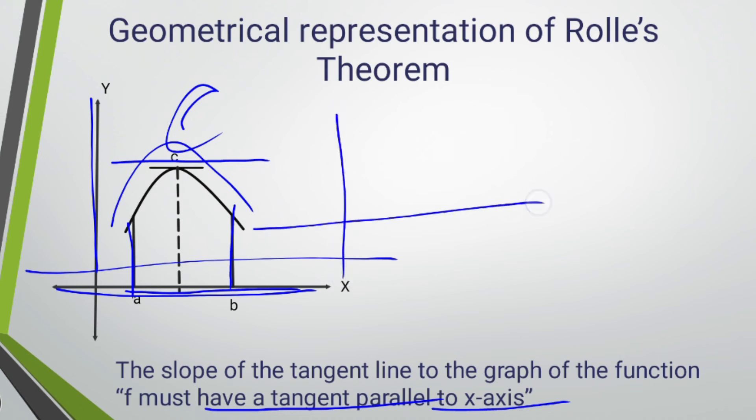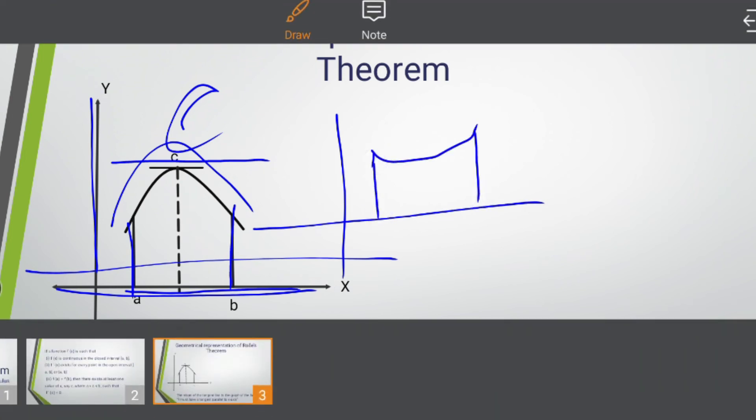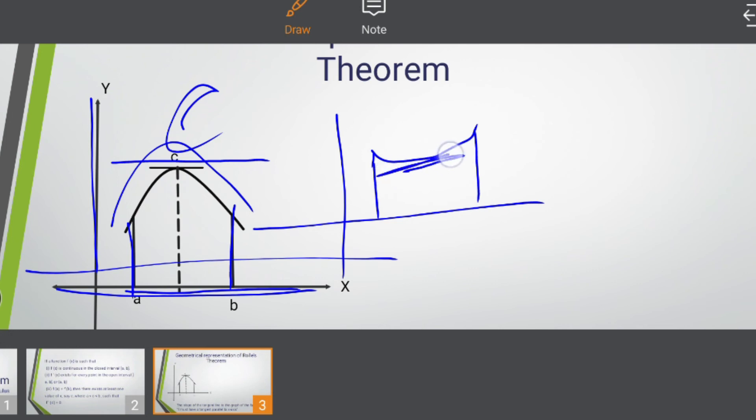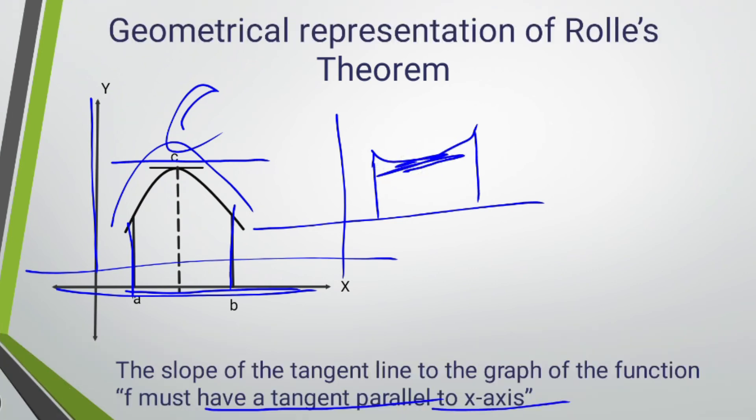For example, if we have a curve like this where f(a) equals f(b), then at this point the tangent will be parallel to the x-axis, meaning the slope will be 0.